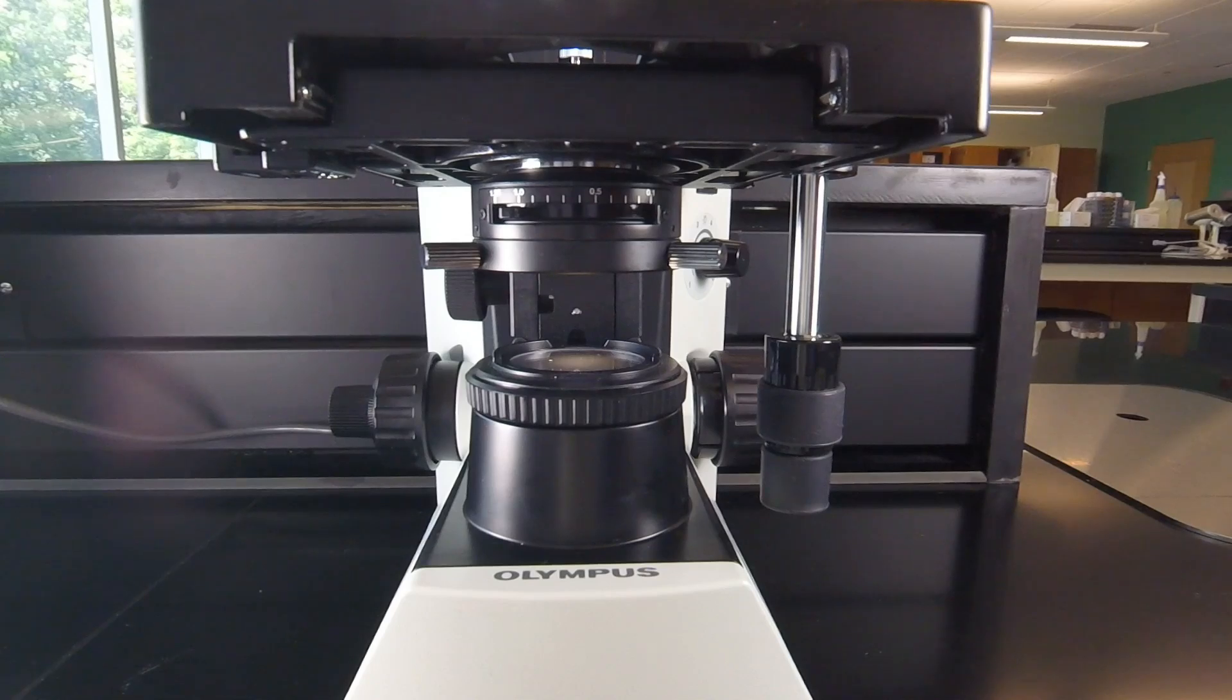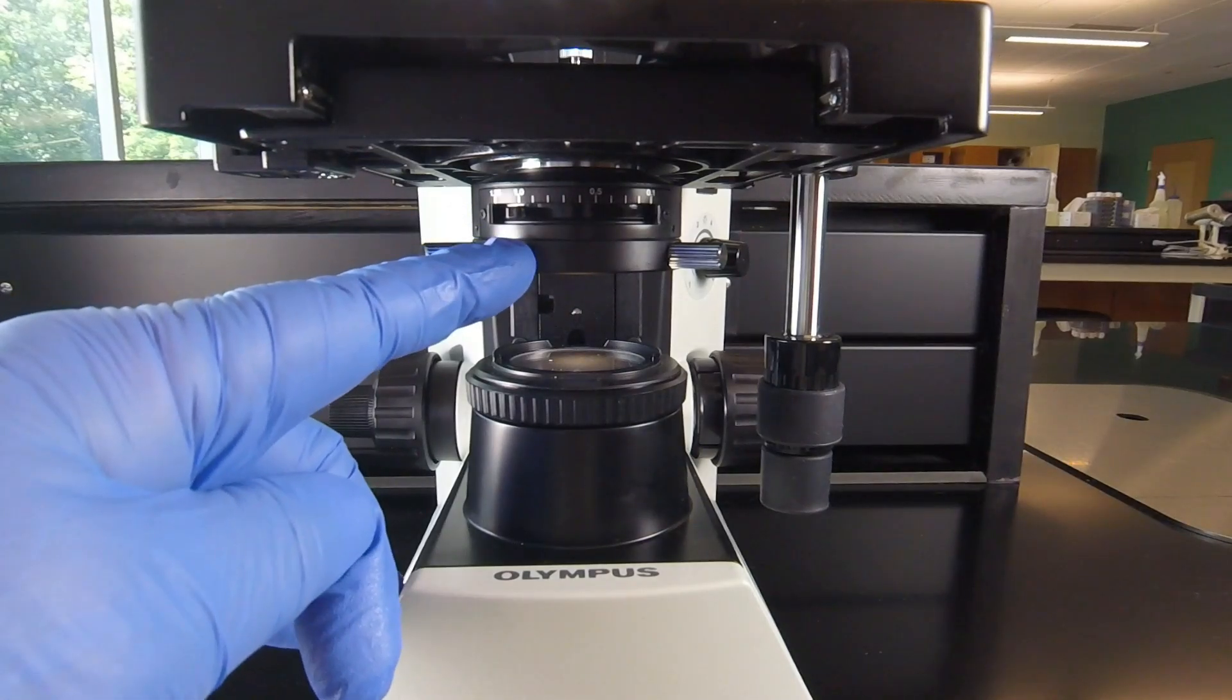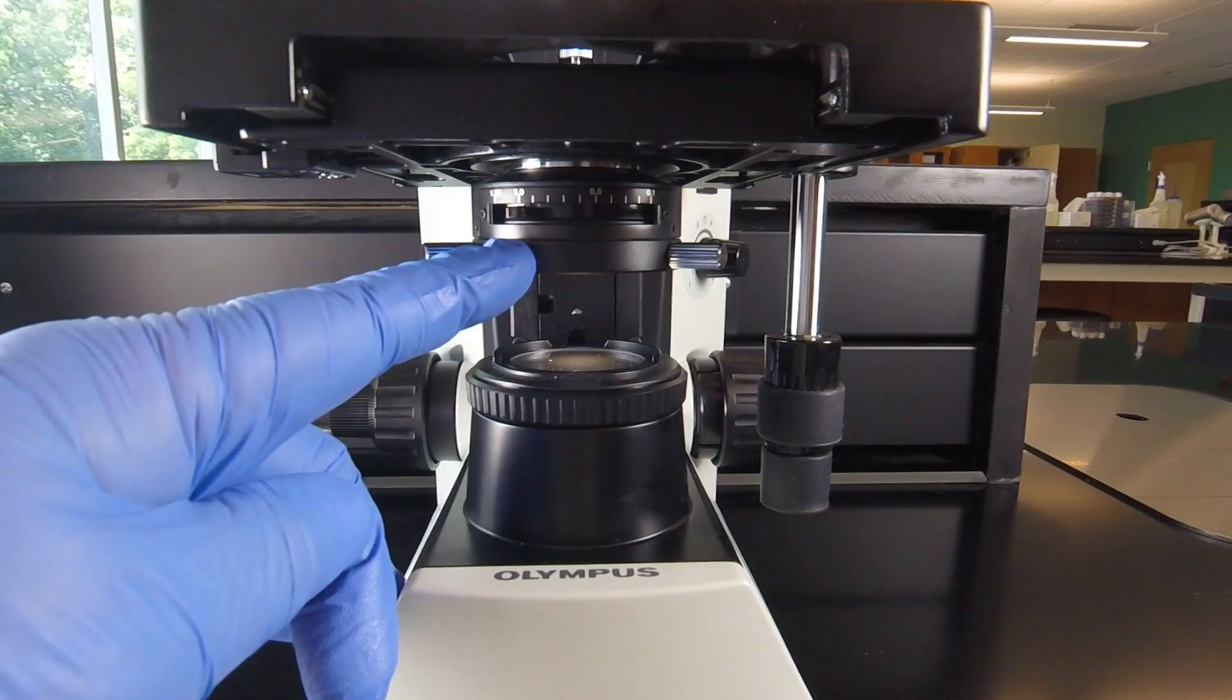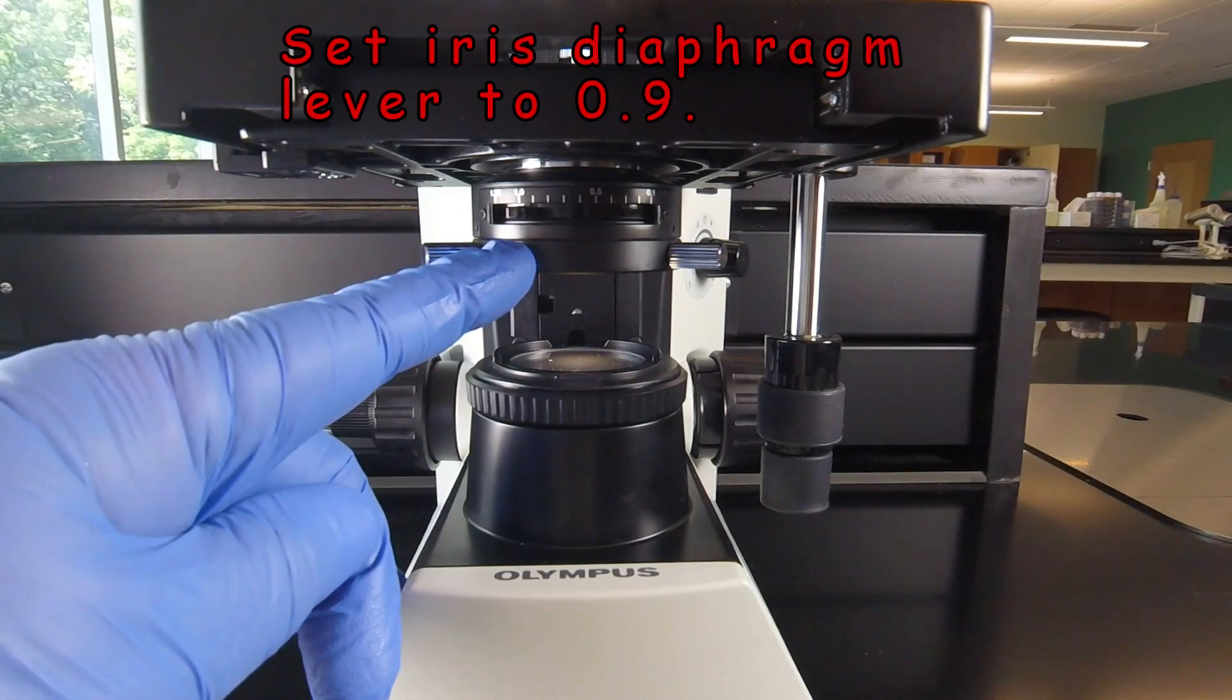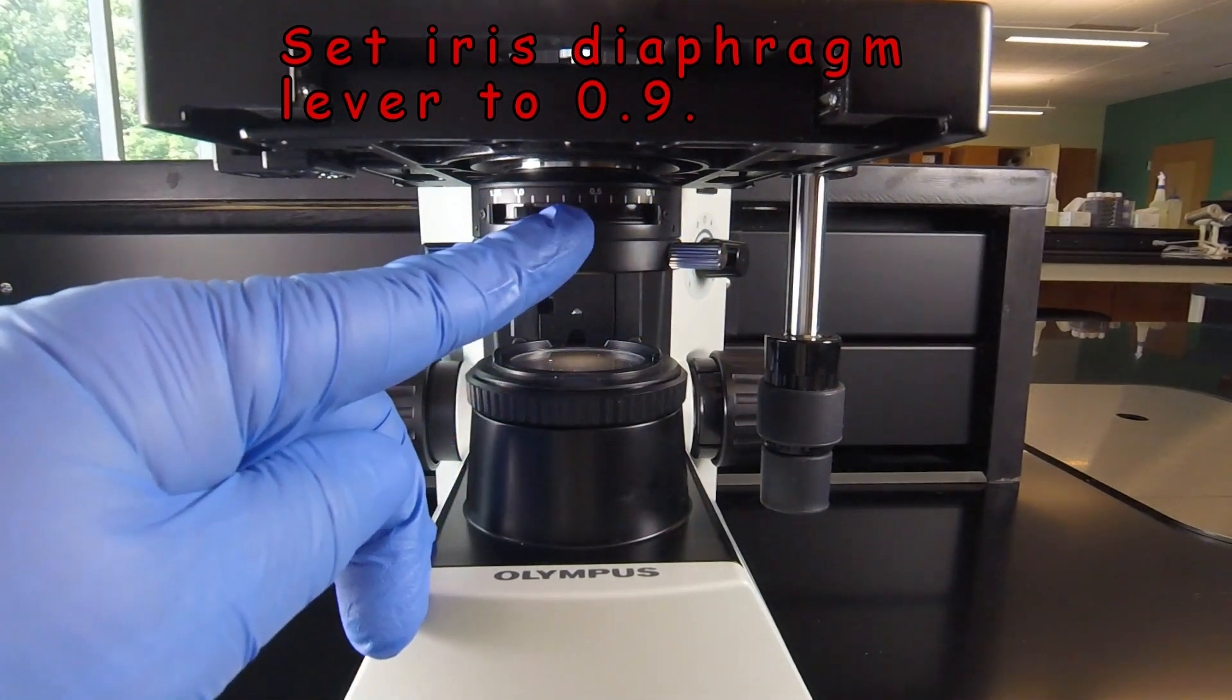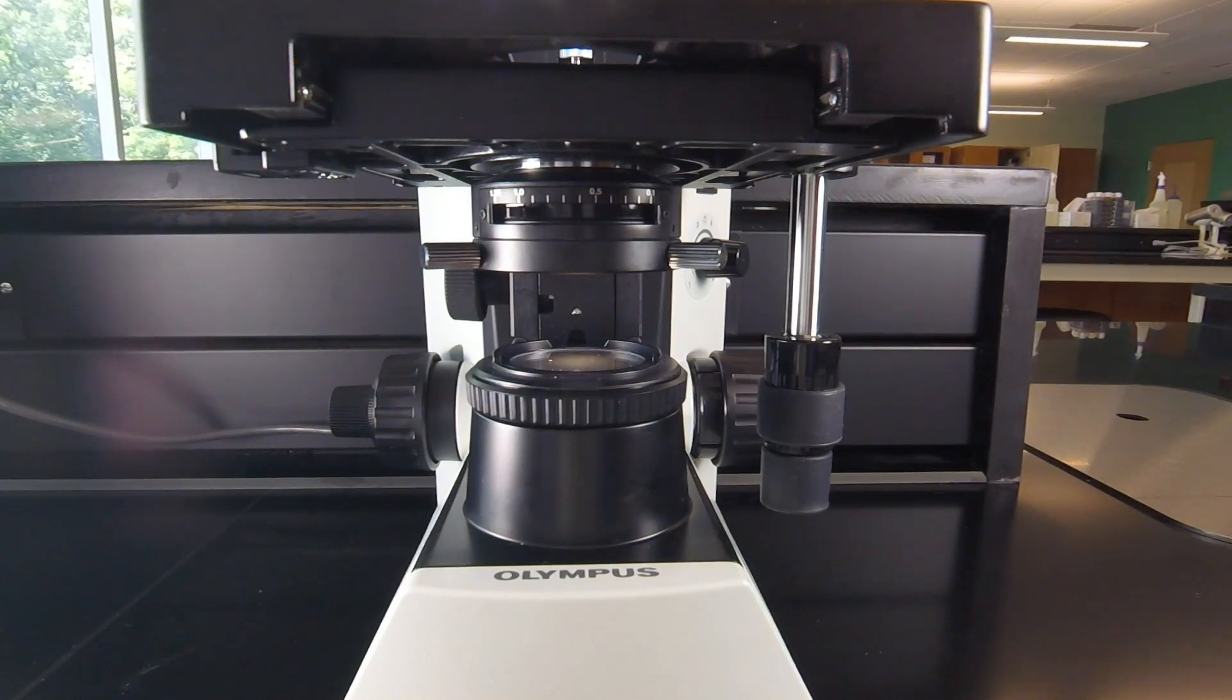Next, we want to make sure that the iris diaphragm lever under the stage, the lever that determines how much light actually comes through the slide and up into the eyepiece, is set so that we have enough light to see the image, but not so much light that it washes the image out. This lever goes left and right, we want to have that set at about 0.9. That's usually a good starting point for using oil immersion microscopy.